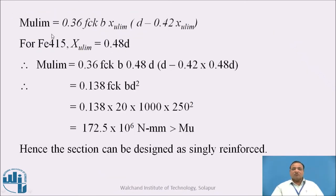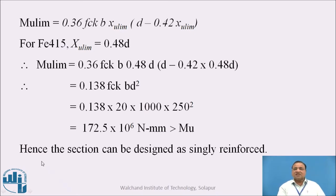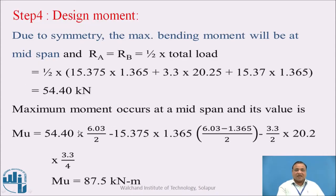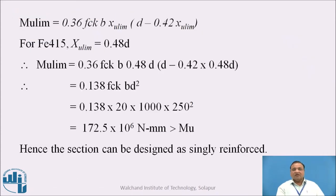Next we find MU limit: 0.36 FCK B into XU limit into (D minus 0.42 XU limit). XU limit for Fe415 is 0.48D. Substituting FCK = 20 and B = 1000 mm per meter run, MU limit works out to be 172.5 into 10 to the power of 6 N-mm. Since the calculated bending moment of 87.5 kN-meter is less than MU limit of 172.5 kN-meter, the section can be designed as a singly reinforced section.